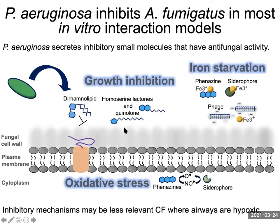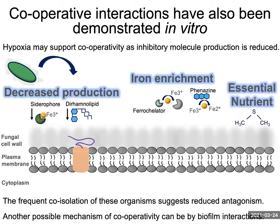In vitro, in most models of interactions between these two organisms, Pseudomonas has been demonstrated to inhibit Aspergillus by secretion of inhibitory small molecules known as quorum-sensing molecules that have antifungal activity, either by inhibiting the growth of the fungus, starving it for iron, or causing damage through oxidative stress. However, these inhibitory mechanisms could be less relevant in the cystic fibrosis airways, which have a hypoxic environment. Under hypoxia, the production of many of these inhibitory molecules could be reduced, supporting an environment of cooperativity.